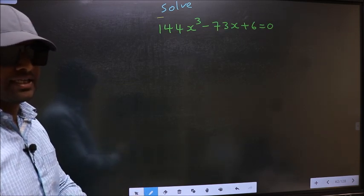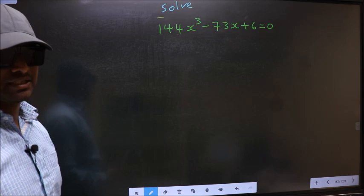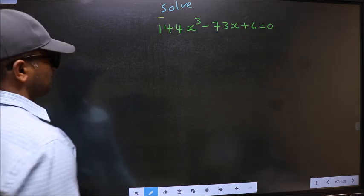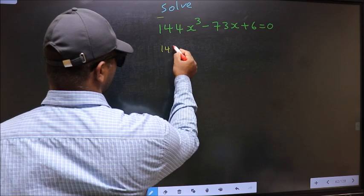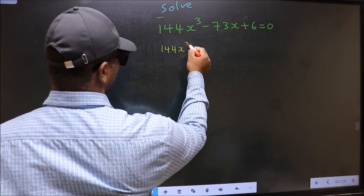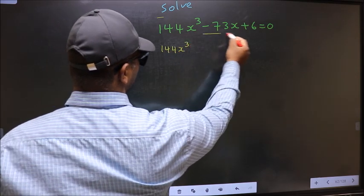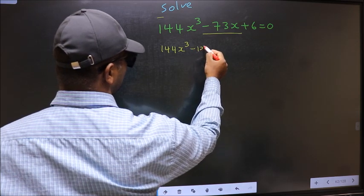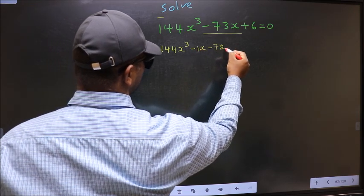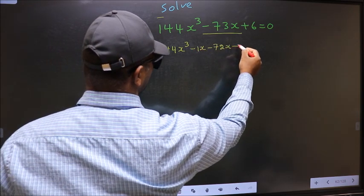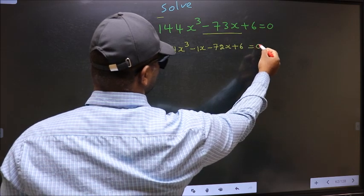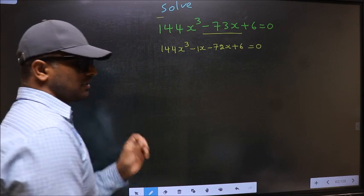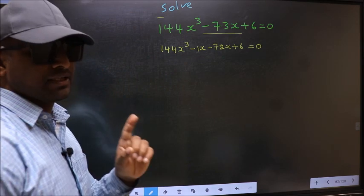For that, we have to change the x term. In place of minus 73x, I write minus 1x minus 72x, so the equation becomes 144x³ minus 1x minus 72x plus 6 equal to 0. This is step 1.